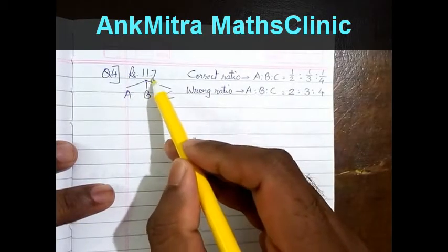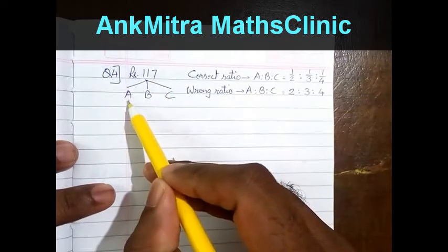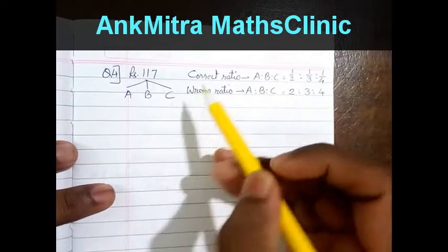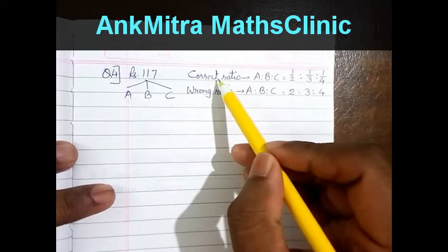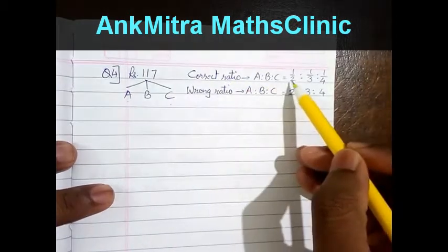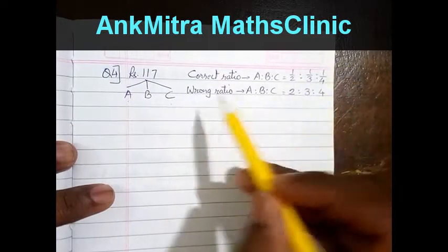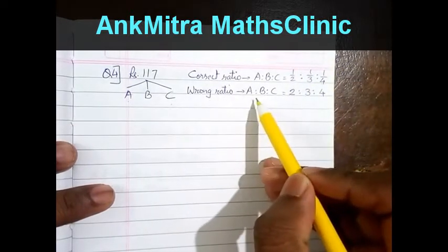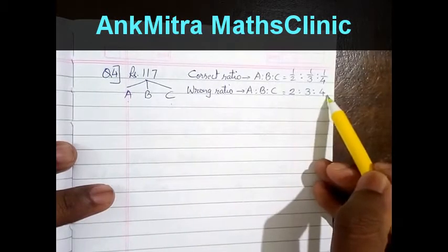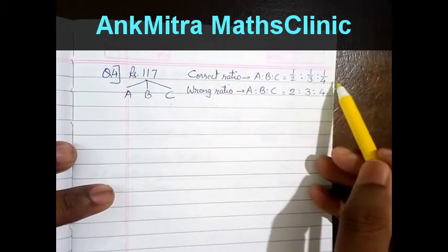Here, rupees 117 is to be distributed amongst A, B, and C. The actual ratio of distribution was 1/2 : 1/3 : 1/4, but by mistake the ratio applied was 2:3:4, the reciprocal of these three numbers.